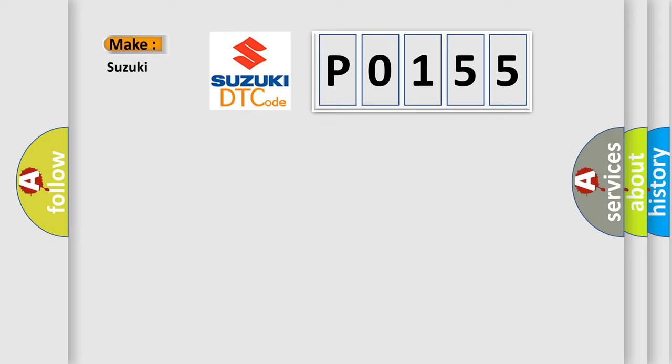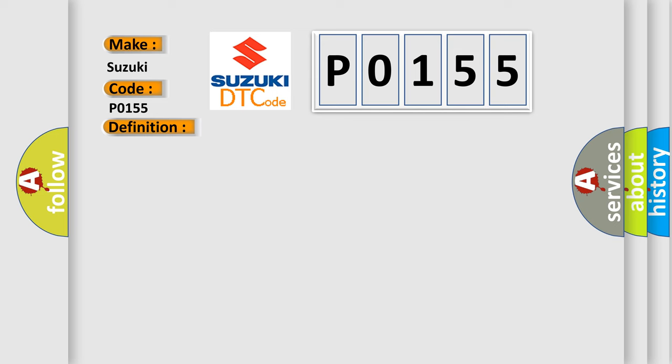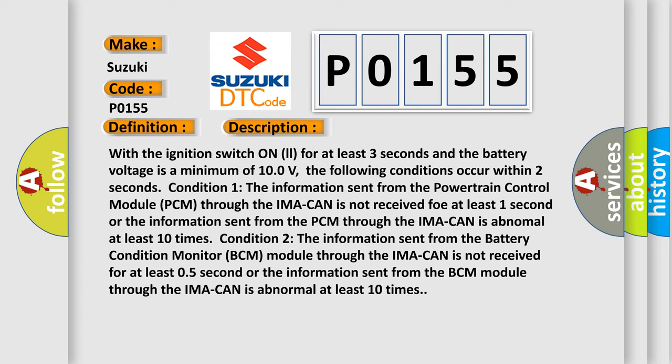So, what does the diagnostic trouble code P0155 interpret specifically for Suzuki? The basic definition is: IMA CAN malfunction — bus off — Motor Control Module (MCM), hybrid models. With the ignition switch on for at least three seconds and battery voltage at a minimum of 100 volts, the following conditions occur within two seconds. Condition one: the information sent from the Powertrain Control Module (PCM) through the IMA CAN is not received for at least one second, or the information sent from the PCM through the IMA CAN is abnormal at least 10 times.